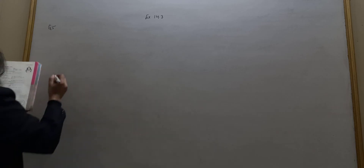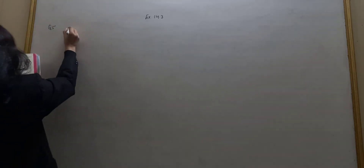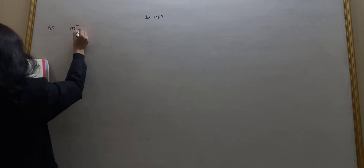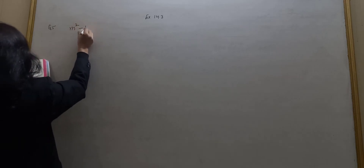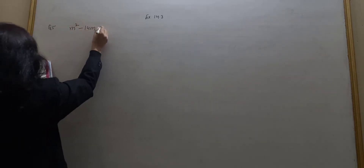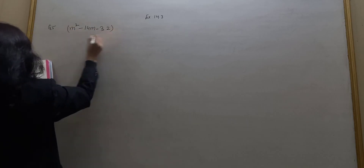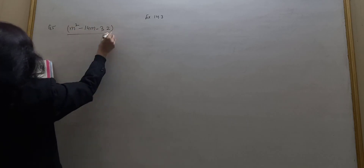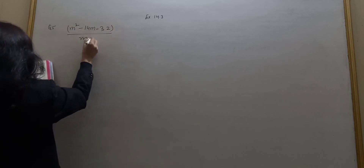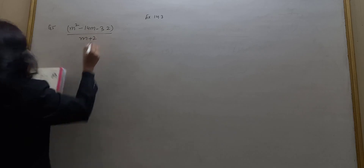Good morning students. Question number 5, second part. Part 5 you have done in the earlier video. Second part: m squared minus 14m minus 32, divided by m plus 2.